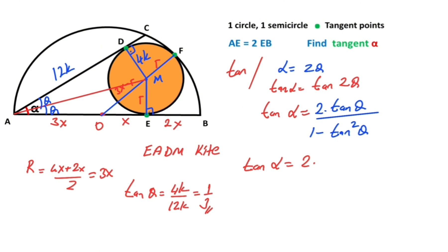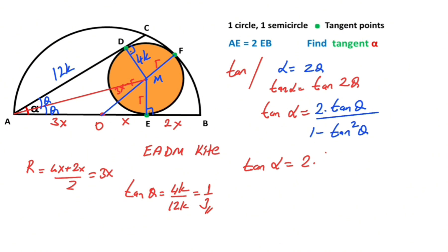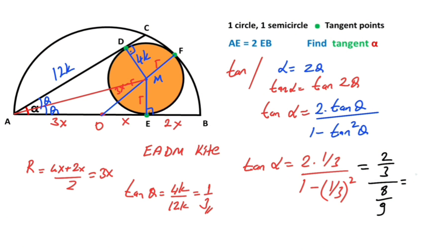Therefore, if we plug in this value to the equation: tangent alpha equals 2 times (1/3) over (1 minus (1/3) squared) = 2 times (1/3) over (1 minus 1/9) = (2/3) over (8/9) = (2/3) times (9/8). Simplifying, tangent alpha equals 3 over 4. Thanks for watching.